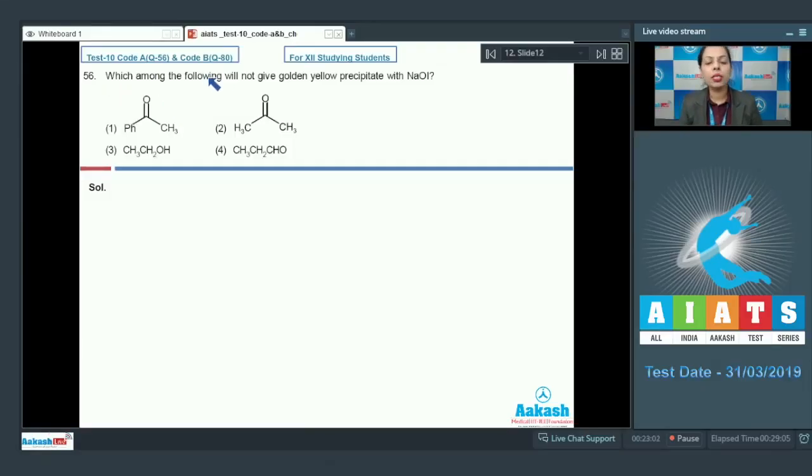Question number 56: Which among the following will not give golden yellow precipitate with NaOI? Just recall which reaction it is. Yes, this is haloform reaction or simply iodoform reaction. In this case, a golden yellow precipitate would be formed if it is reacting with some keto methyl group. If you look at the first option, you'll see that this is a keto group and this is a methyl group directly attached to it.